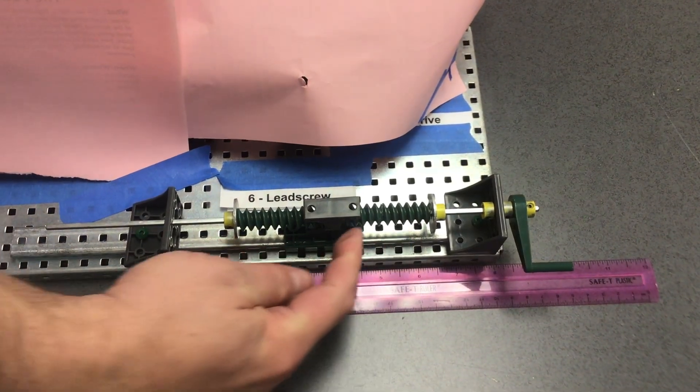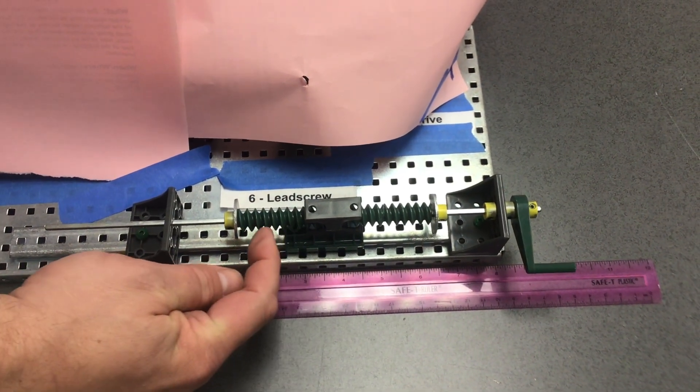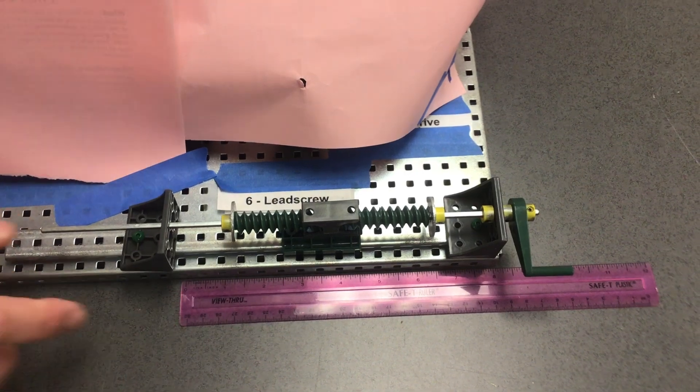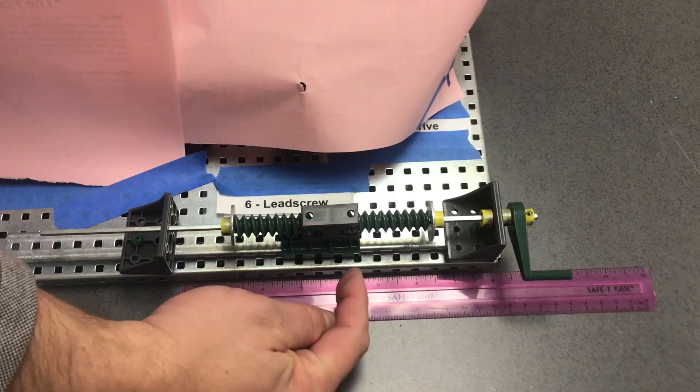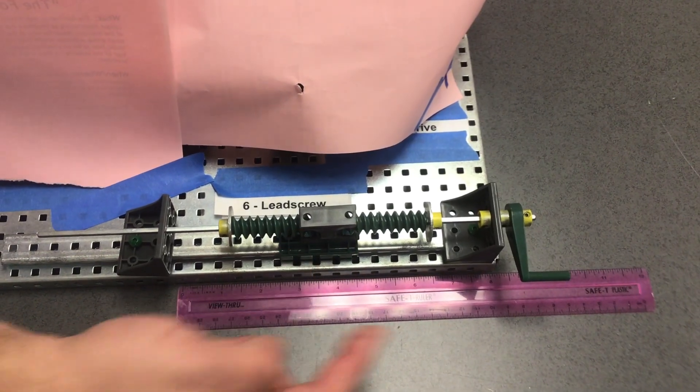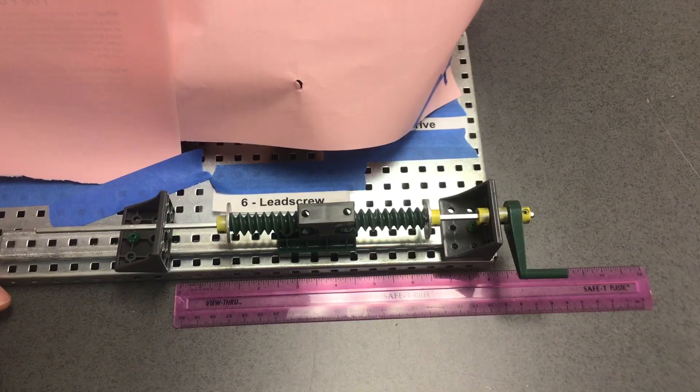This would change if we changed what type of threads we had on this screw block, but here in our classroom we only have this size. So for this to travel one inch, it'll be 4.75 rotations.